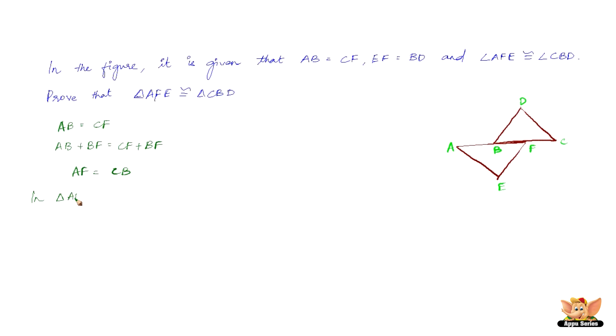In triangle AFE and triangle CBD, we have AF equal to CB. Now, let us take this as 1, so we can say this is from 1.